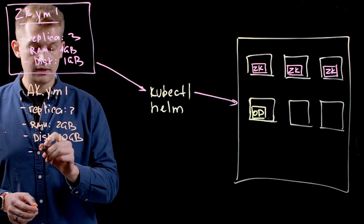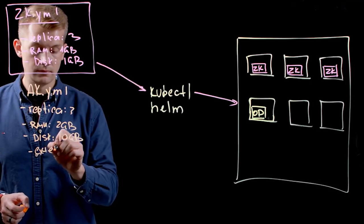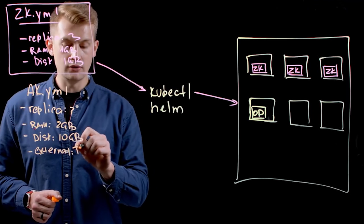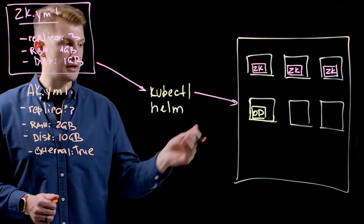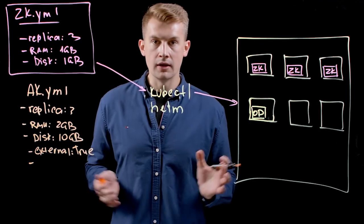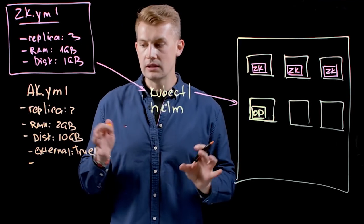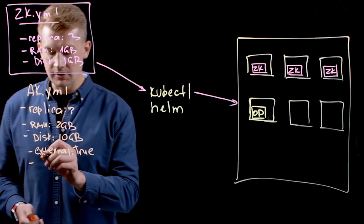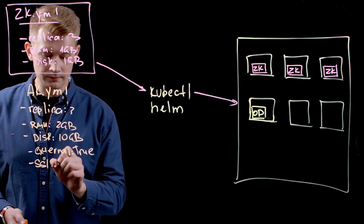Also, you can say external if you want to expose your Kafka outside of your Kubernetes cluster. Also, things like security. You can enable SSL communication by default, so you can say SSL true.